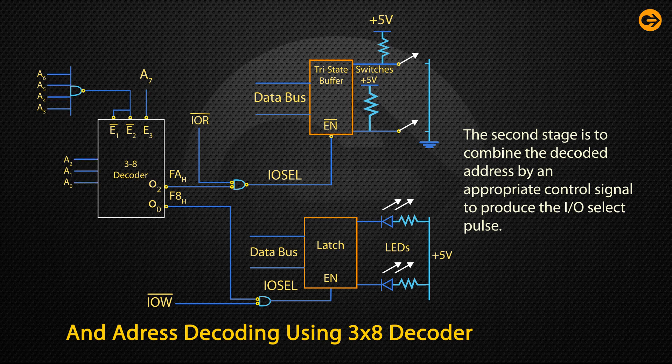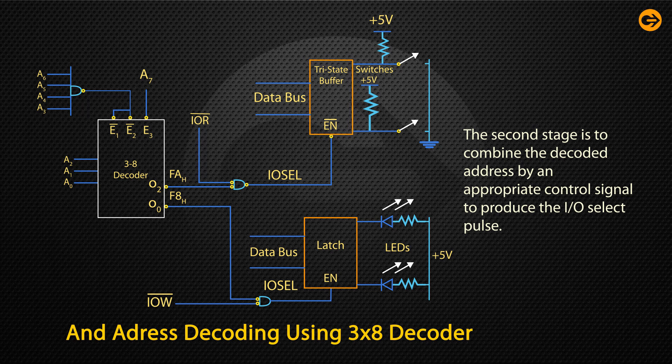Similarly, the output O2 of the decoder is combined with the I/O read or I/O r bar signal and the I/O select pulse is used to enable the input buffer with the address F8H.